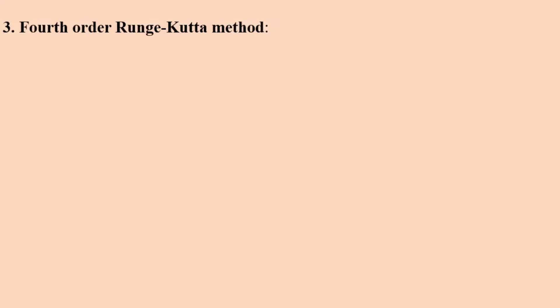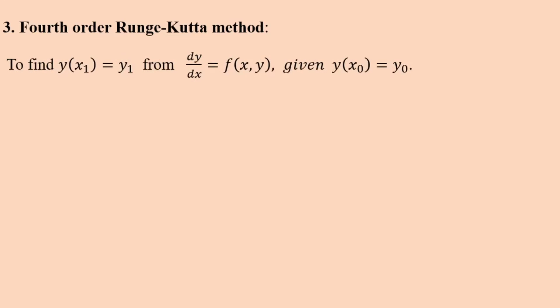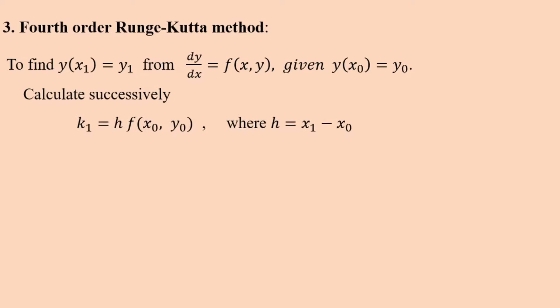The third method is the fourth-order Runge-Kutta method. To solve dy/dx = f(x,y), given y at x₀ equals y₀, to find the value of y at x₁ (that is y₁), we calculate successively k1, k2, k3, k4. k1 is h·f(x₀, y₀) — substitute x₀ and y₀ into f(x,y), multiply by h. Here h = x₁ - x₀.